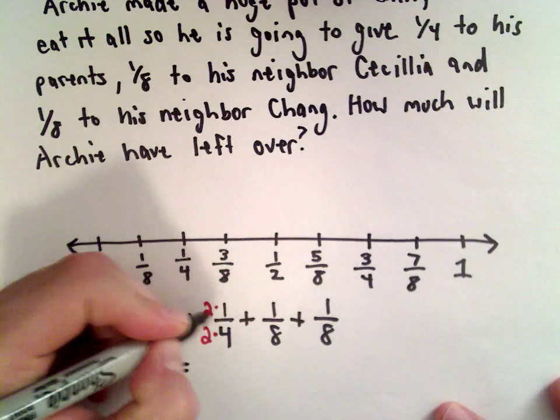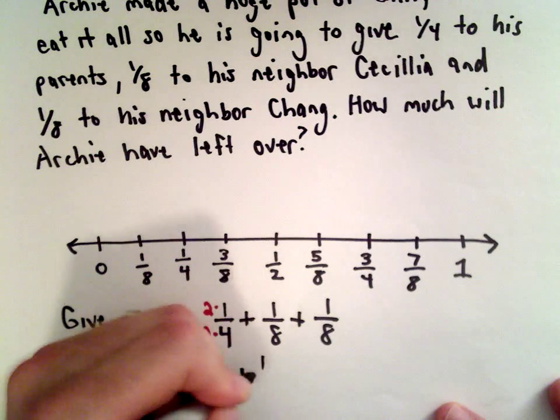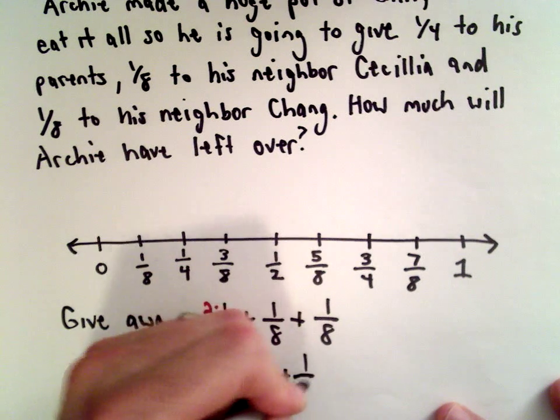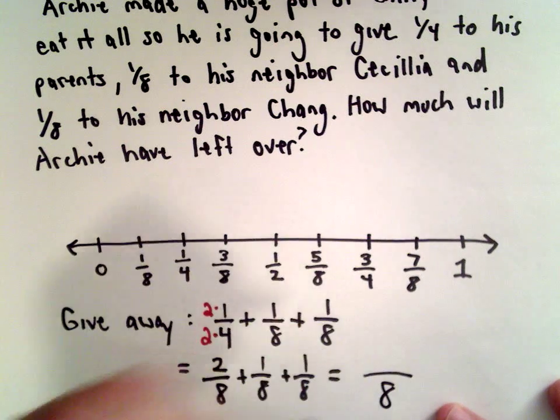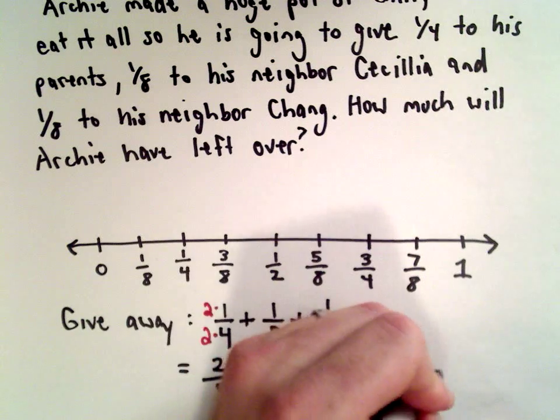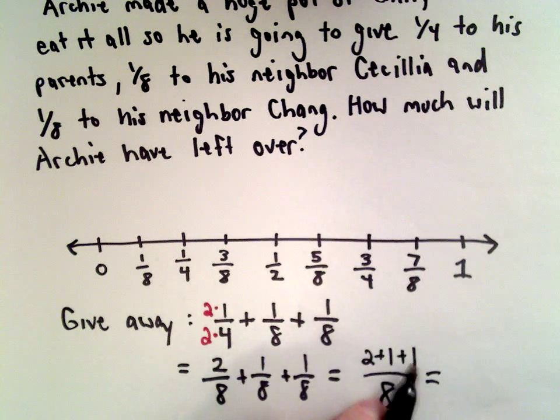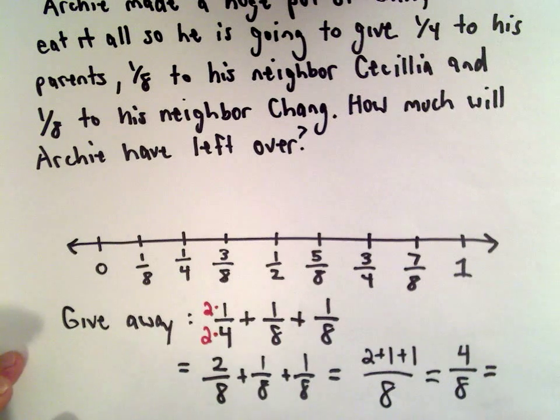So I'll have, let's see, two times one is two, two times four is eight, plus one-eighth, plus one-eighth. And when we have common denominators, we do the arithmetic in the numerator. So I would have two plus one plus one. Well, two plus one plus one, that's going to give us four.